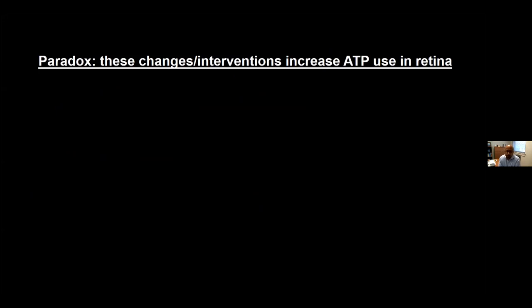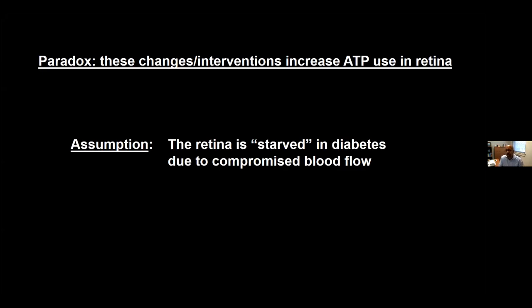The reason we find these results paradoxical rests on a basic assumption: that the initial insult in diabetic retinopathy is a vascular one — that the retina is somewhat starved in diabetes because of compromised blood flow, and therefore strategies to repair blood flow could be therapeutic. One would also assume that strategies to reduce metabolic demand would ameliorate diabetic retinopathy. That latter approach — reducing metabolic demand in clinical settings — has not proven to be very effective, as several studies have shown.